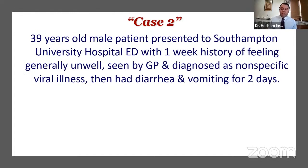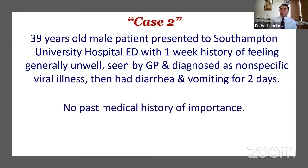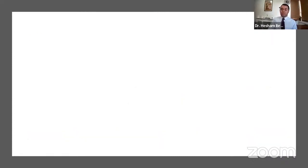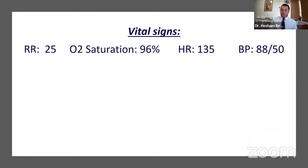Case two: a 39-year-old male presenting to Southampton University Hospital Emergency Department with one week of feeling generally unwell. The GP diagnosed a non-specific viral illness. He then had diarrhea and vomiting for a couple of days. He walked in — no ambulance — with no past medical history. The receptionist thought something was wrong and called a senior nurse, who took the patient to the assessment room and checked his observations: tachycardic and hypotensive.